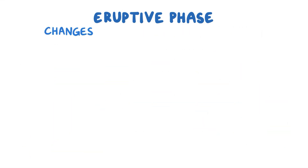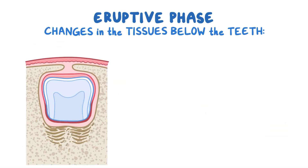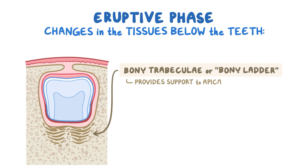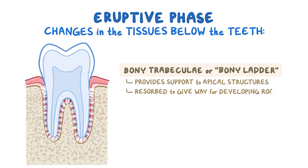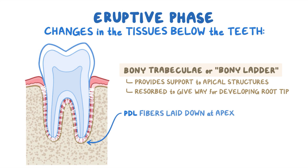Some changes also happen to the tissue below the teeth. Eruption of the tooth leaves behind some space at the bottom of the bony crypt. This space gets filled up by fine bony trabeculae, or bone with tiny gaps in its structure. The bony trabeculae, also sometimes known as the bony ladder, provides support to the apical tissues. At the end of the eruptive phase, this bony ladder is resorbed to give way for the developing root tip. Ultimately, bundles of PDL fibers are laid down at the apex, extending from the root tip to the bony floor.